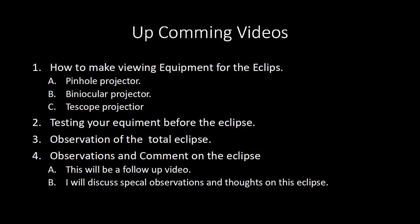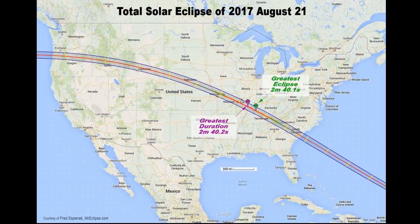I will be making four more videos on the Great American Eclipse. The next one will be how to make viewing equipment, including a pinhole projector, binocular projector, and a telescope projector. The second will be testing your equipment before the eclipse. The third will be the actual observation of the eclipse, and the fourth will be observations and comments — a follow-up discussing special observations and thoughts. If you are within the range of totality, you will be treated to a show you will remember for the rest of your life. If you are outside of it, you will only have a partial eclipse, but still feel free to enjoy it with safety viewing equipment, because even partial solar eclipses are pretty interesting.